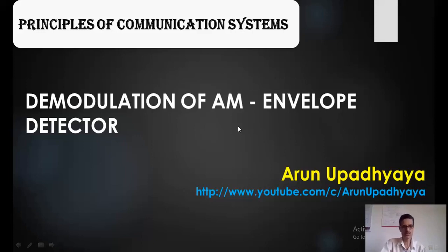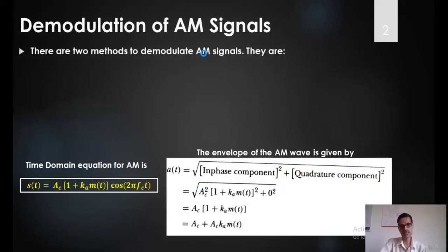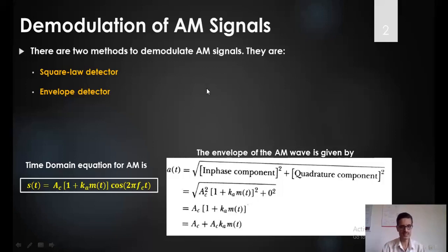We can perform this by using the demodulator, also called a detector. We have to understand one type of method called the envelope detector in this video. Basically, there are two different types of demodulation: the first one is a square law demodulator, and the other one is an envelope detector. The square law demodulator is a non-linear demodulator, while the envelope detector is a linear diode detector or linear diode demodulator. Depending on which portion of the diode characteristic we are operating, we can have square law demodulation or envelope detection.